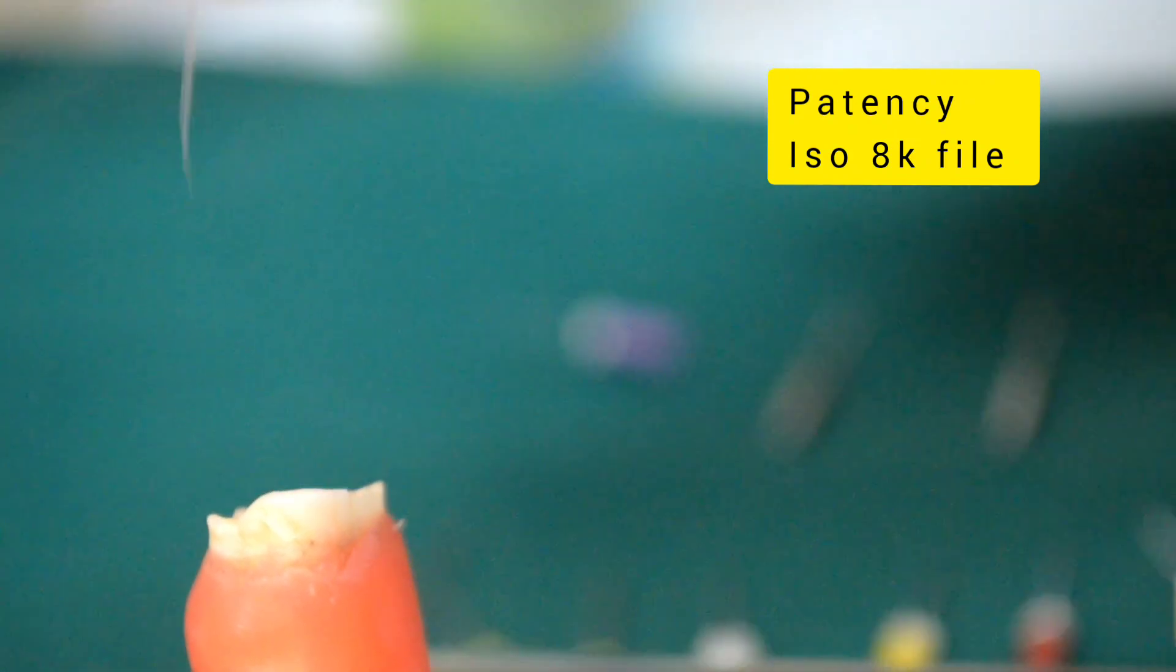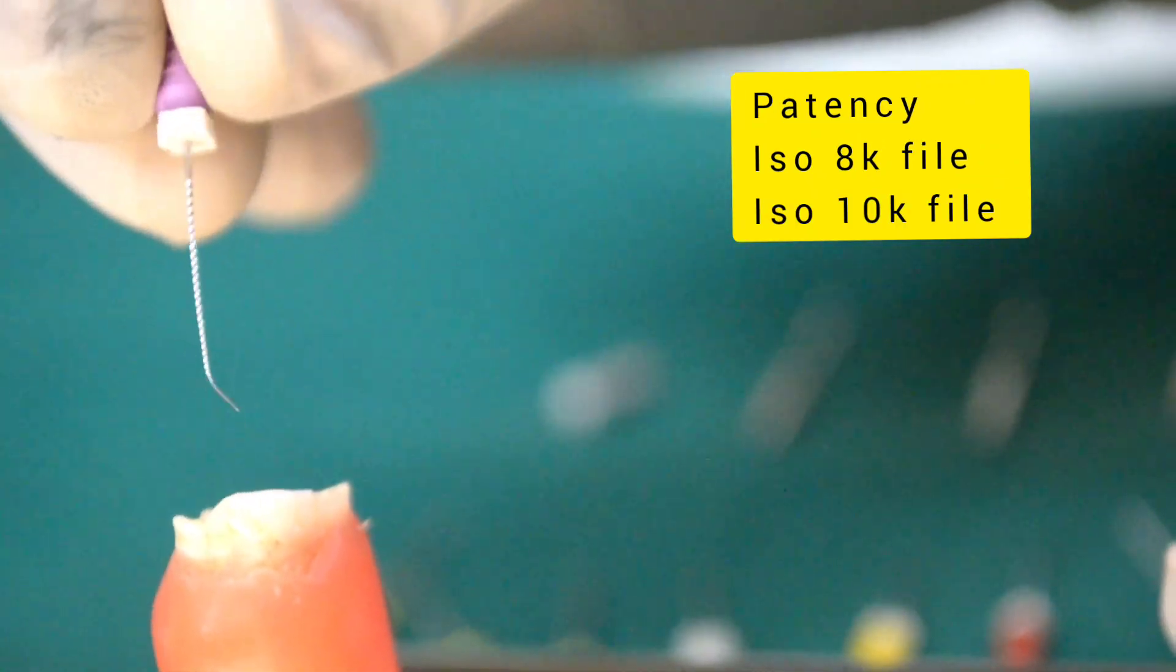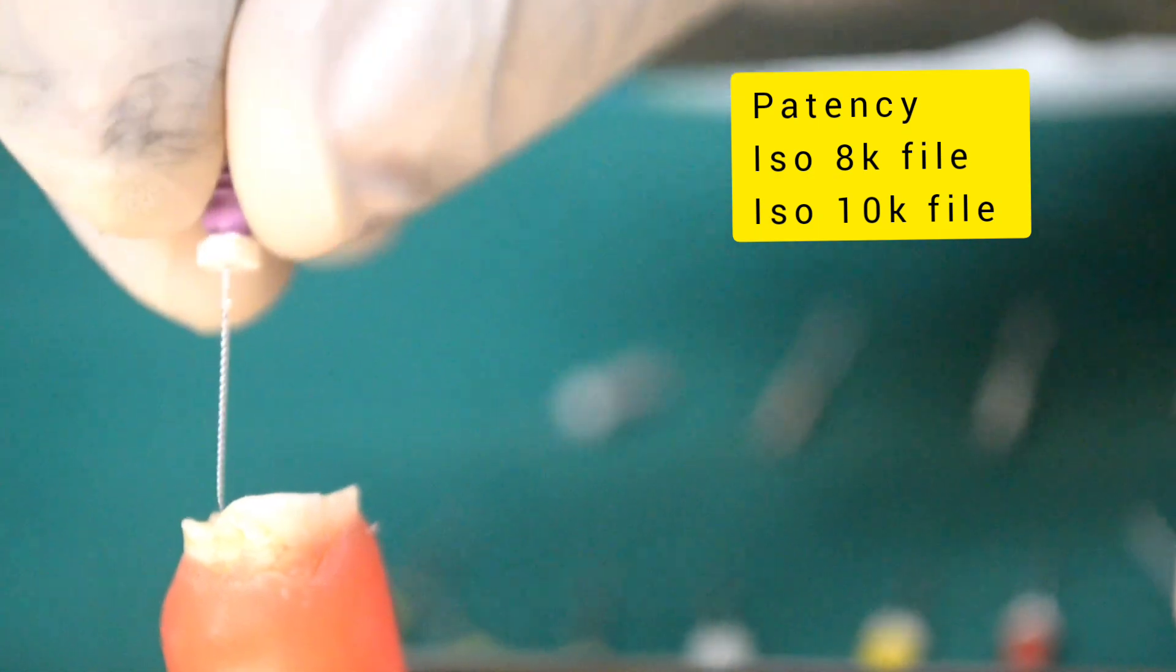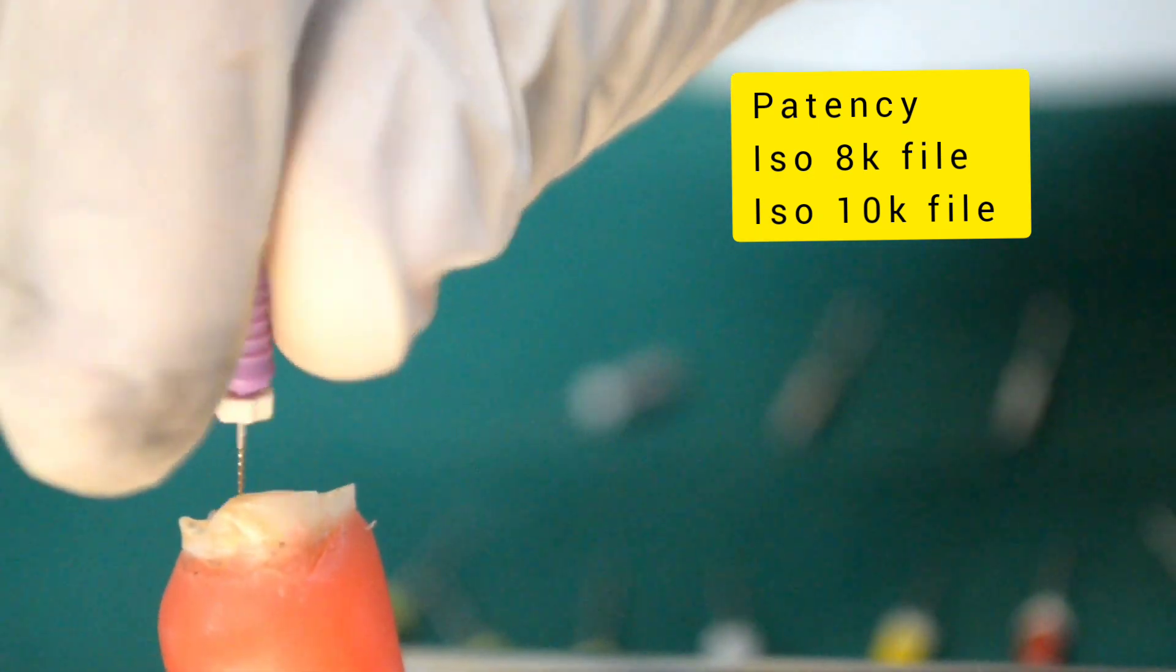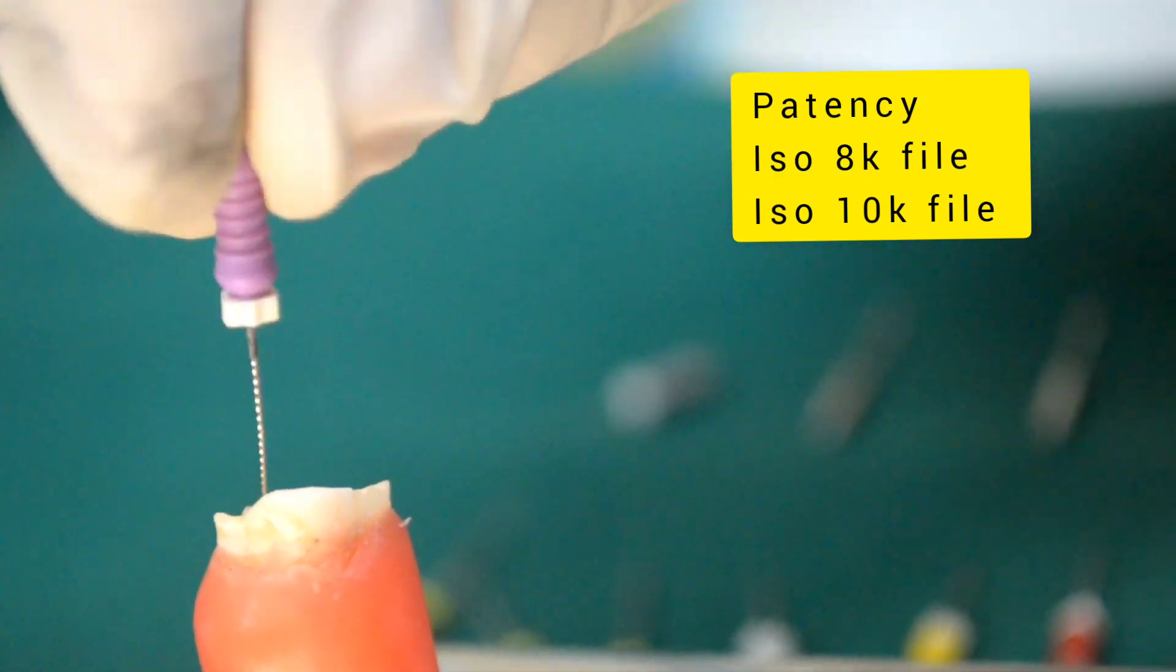This is followed by placing the pre-curved 10K file in a watch winding motion. Obtaining patency with number 8 or 10K file forms the first step in any technique of root canal shaping.